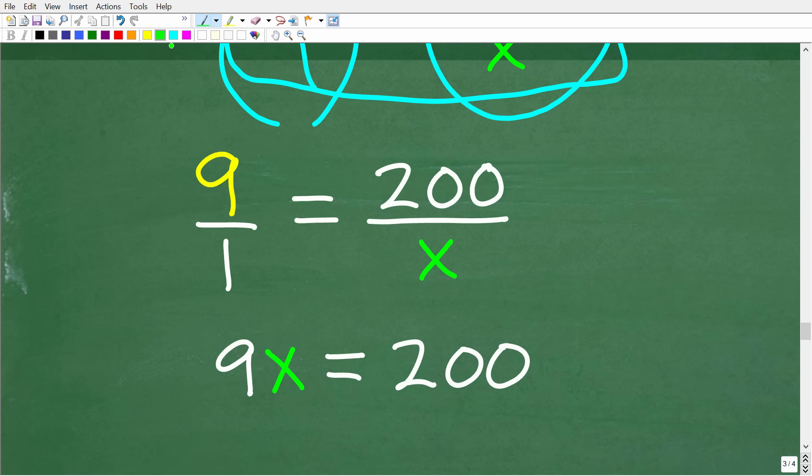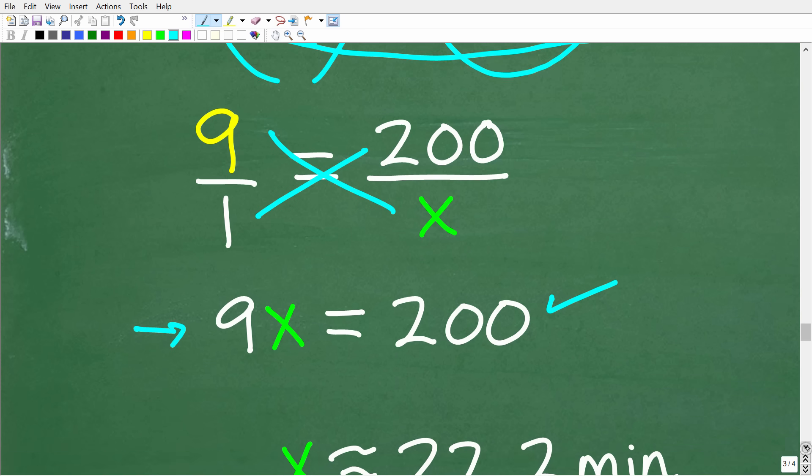So, what we're going to do is simply use the cross product, i.e. cross multiply, to solve for x. So, we're going to have 9 times x. It's 9x is going to be equal to 1 times 200 or 200.